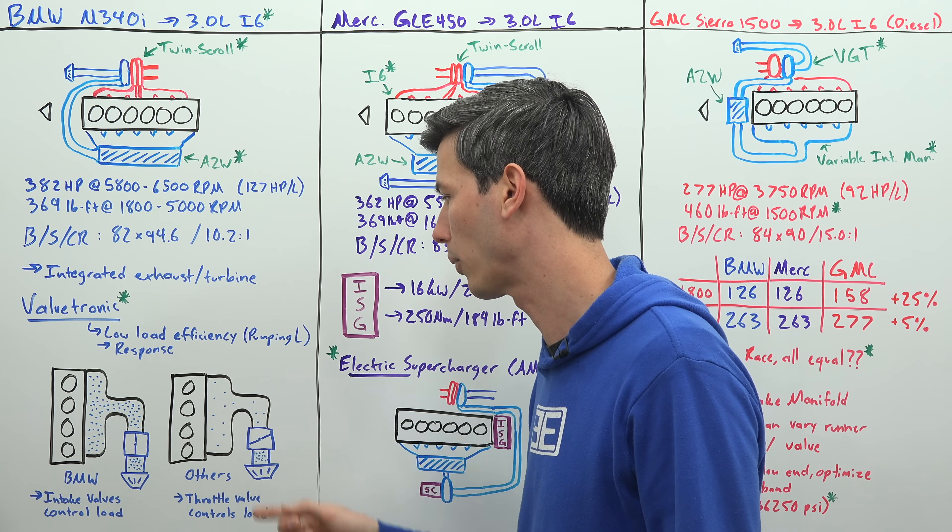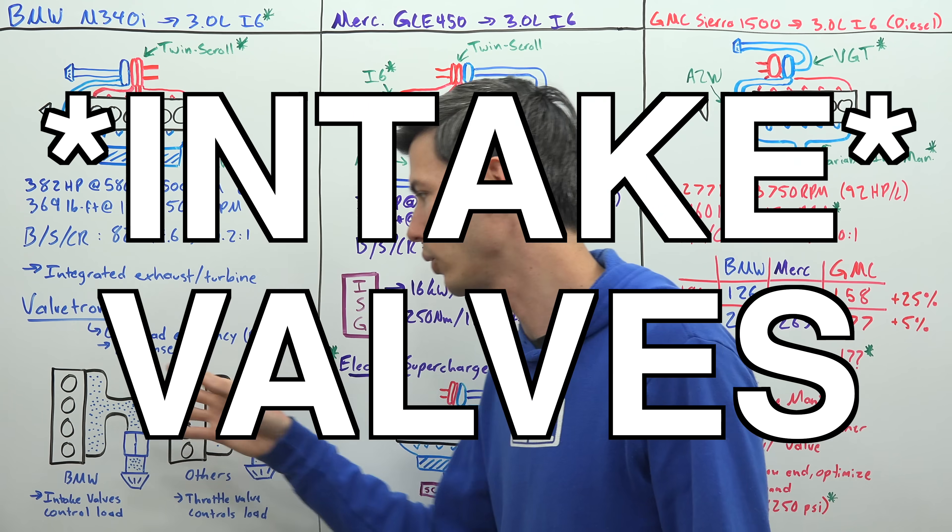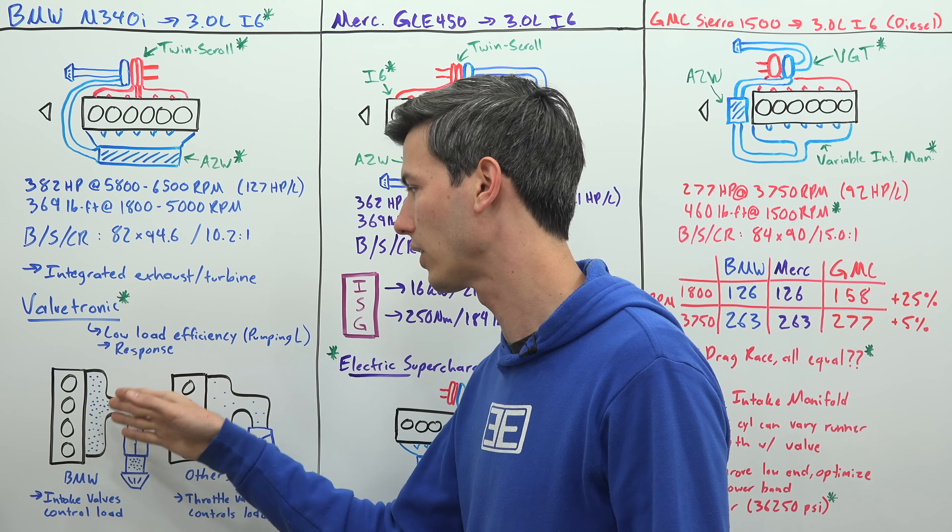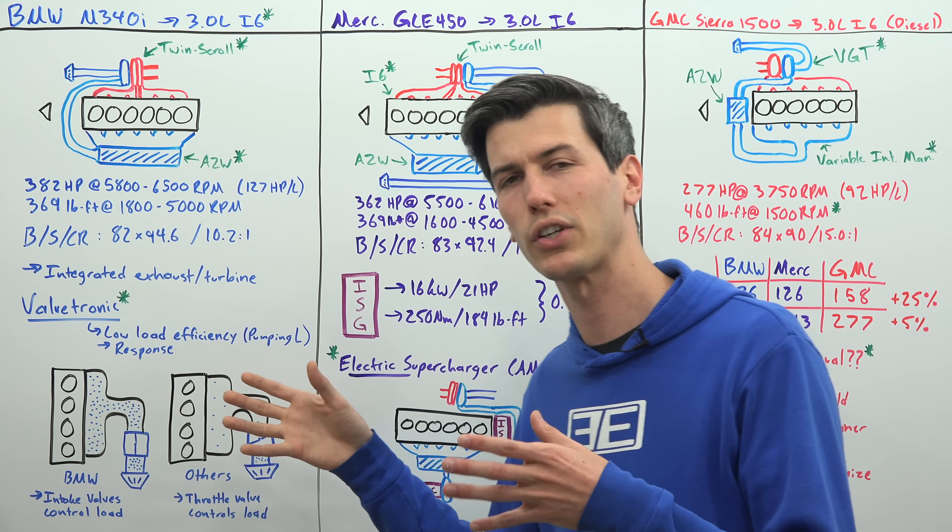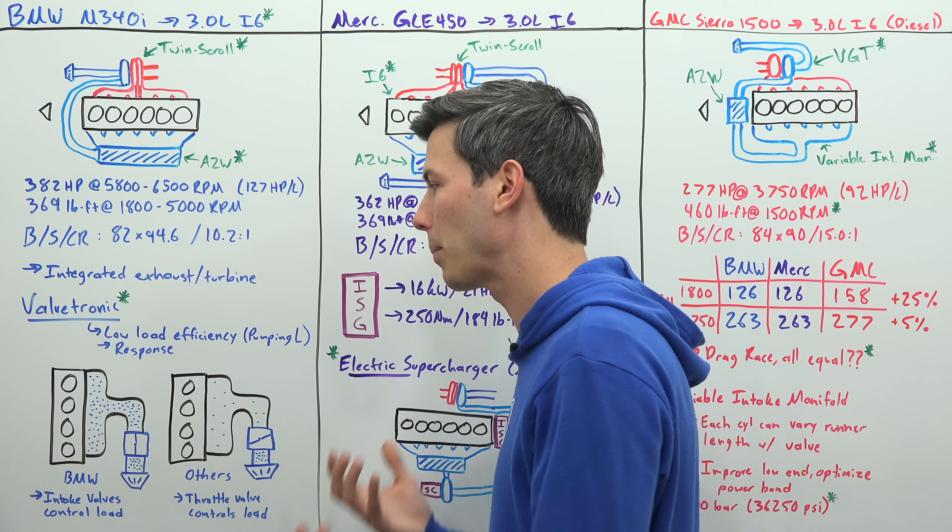Versus BMW's method, you're going to have atmospheric air all the way to those throttle valves. And so the difference here is that it's going to have significantly less pumping losses, especially in those low load scenarios. So it's a more efficient way of operating the engine.